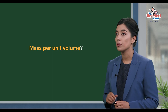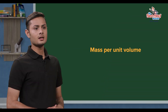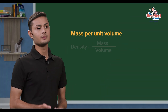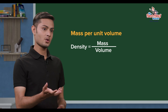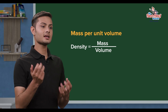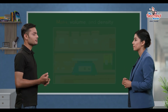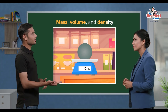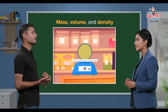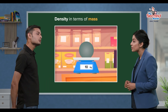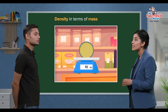Mass per unit volume — that's density. So, mass, volume, and density. In the same way, we can think about charge in terms of density.